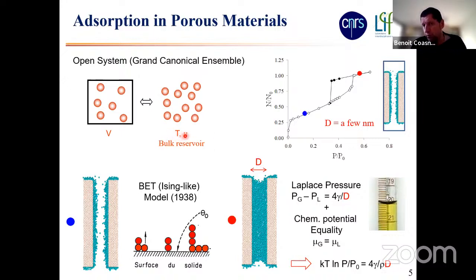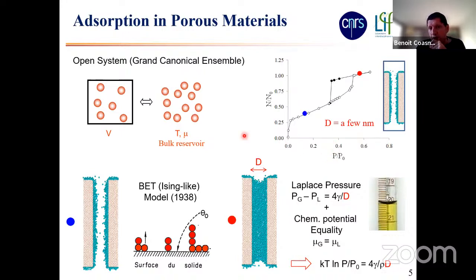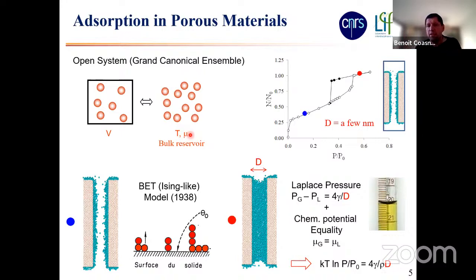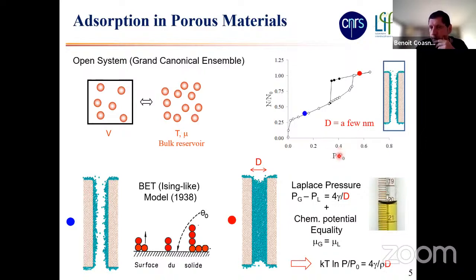If you fix the temperature and the chemical potential, you also fix the gas pressure. That's why usually we plot the adsorption isotherm as a function of pressure and not chemical potential. But what you impose in these experiments or molecular simulations is a chemical potential. Since you impose the chemical potential, what you measure is the conjugated variable — the number of molecules in the system. You measure this adsorption isotherm: the number of molecules as a function of chemical potential, or the gas pressure.